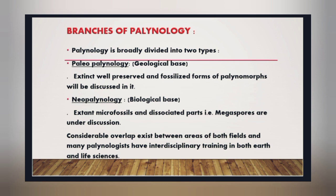Palynology is broadly classified into two major branches: the first is paleopalynology and the second is neopalynology. Paleopalynology has a geological basis in which extinct, well-preserved and fossilized forms of palynomorphs are studied — یعنی قدیم زمانے کے spores, pollen اور microfossils جو rock beds میں محفوظ ہیں۔ Neopalynology میں living microfossils اور ان کے dissociated parts جیسے megaspores کی study کی جاتی ہے۔